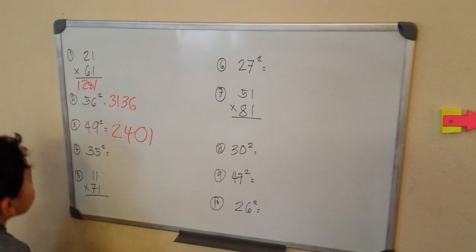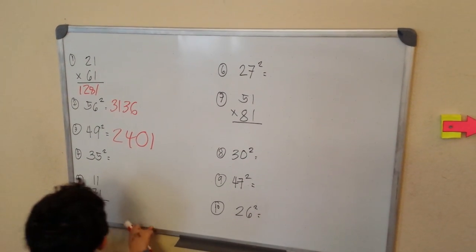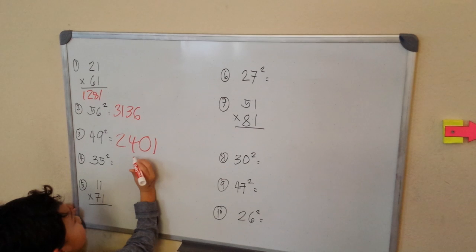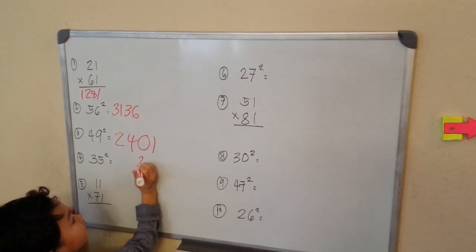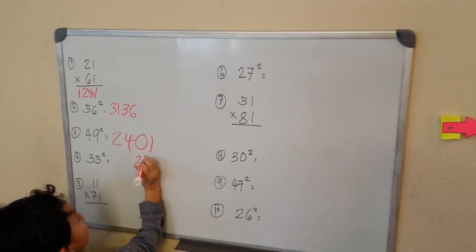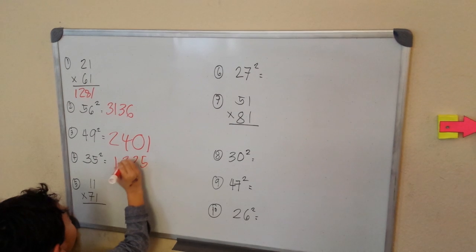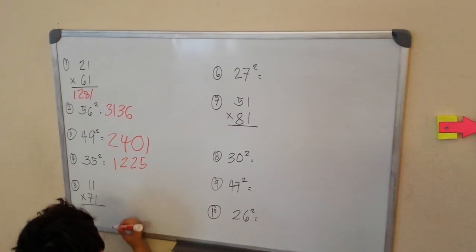35 squared. 25 at the end. 3 times 4 is 12. 1,225.